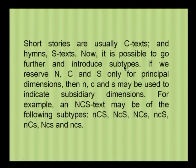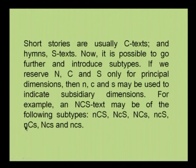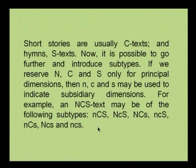It is possible to go further and introduce subtypes. If we reserve N, C and S — the capital letters — only for principal dimensions, then the small n, small c and small s may be used to indicate subsidiary dimensions. For example, an NCS text may have only a small n as part of it, or a small c or small s. It is also possible that none of the three dimensions is essential to a text, in which case we call it the small n, small c and small s text. This means a text can deal with nature, culture and the sacred, but those aspects are not very important to that particular text.